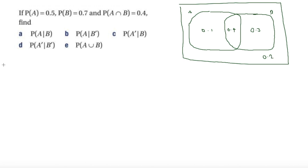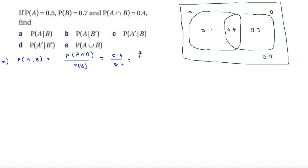For Part A, I'll show both approaches. Using the formula, P(A|B) equals P(A and B) divided by P(B), which is 0.4 divided by 0.7 = 4/7. Using the Venn diagram, given B we look at the B region: 0.4 over the total of 0.7 gives the same answer of 4/7.